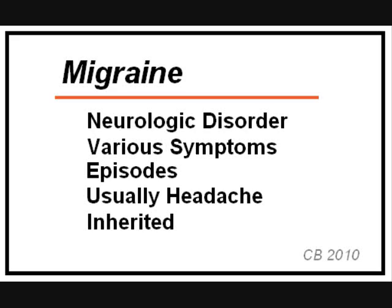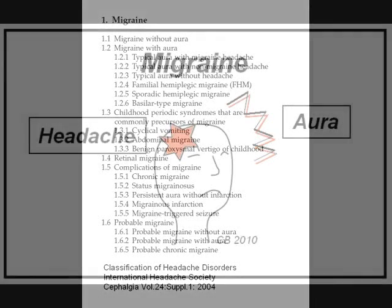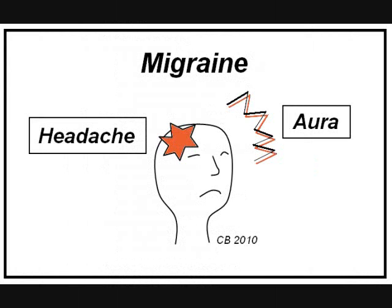A headache is usually involved, but not always, and migraine appears to be inherited. Speaking of various neurologic symptoms, this is the full International Headache Society list of different types of migraines. There are too many to discuss them all, so we will limit this discussion to the three most common types — different ways of combining two things: headache and aura. Aura is a particular visual display or sensory defect that comes just before the headache, if there is one.